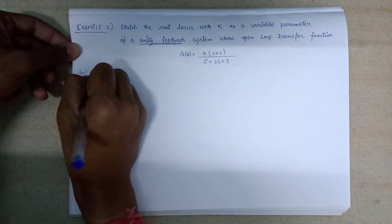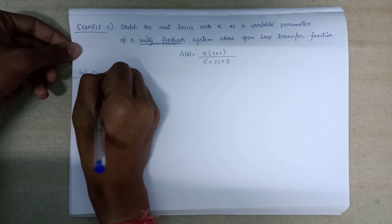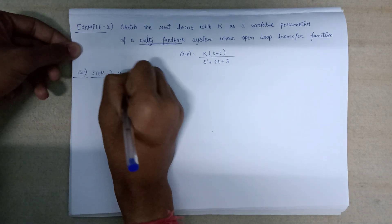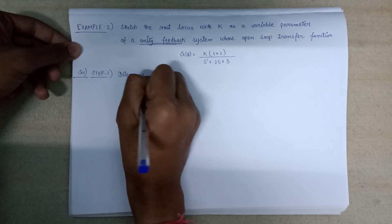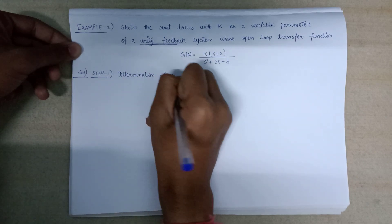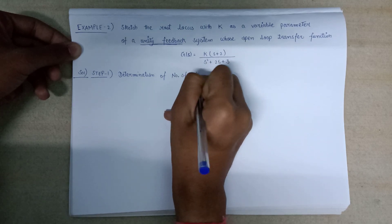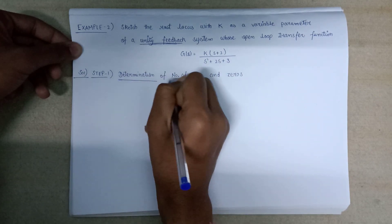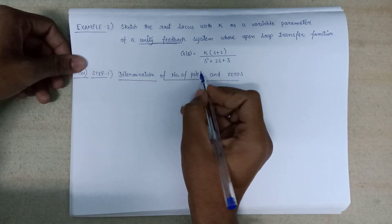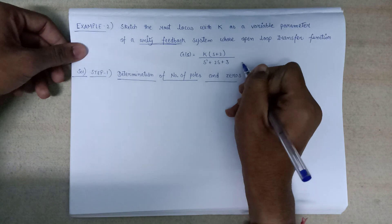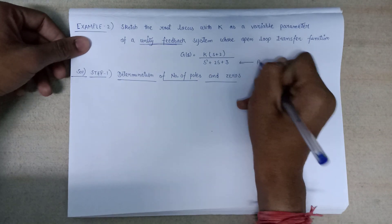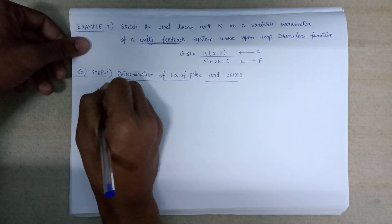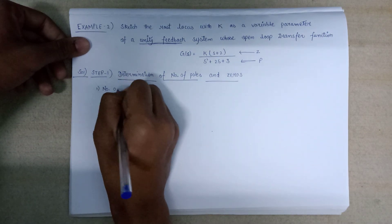The solution will be: in step one, we need to determine the number of poles and zeros. We will calculate the number of poles by equating the denominator to zero, and the number of zeros by equating the numerator to zero.